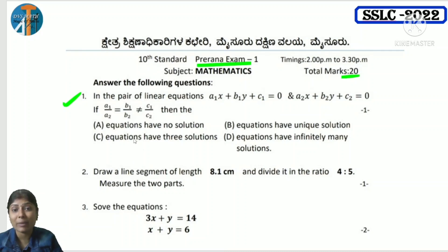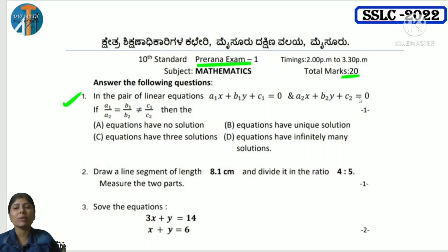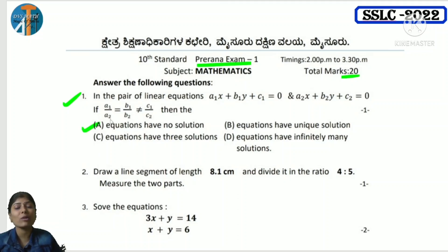First question is related to: the table has a pair of linear equations — a1, a2, b1, b2, c1, c2. In the pair of linear equations: a1x + b1y + c1 = 0 and a2x + b2y + c2 = 0 — if a1/a2 = b1/b2 ≠ c1/c2, then there is no solution, because these are parallel lines.